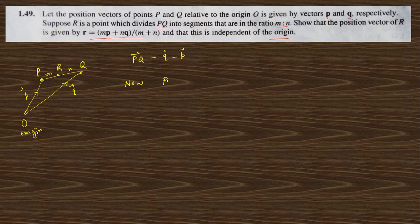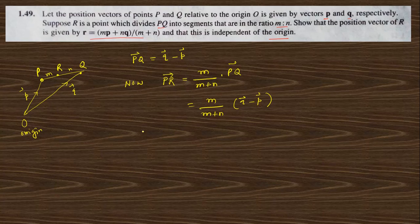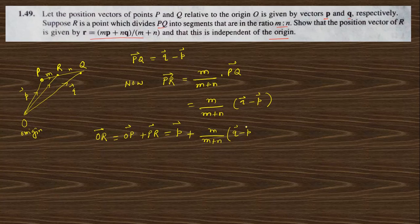The PR vector is nothing but m/(m+n) times the PQ vector, and this is nothing but m/(m+n) times (q-vector minus p-vector). So the position vector of R, the OR vector, is nothing but OP vector plus PR vector. OP vector is p-vector and PR vector is m/(m+n) times (q-vector minus p-vector).